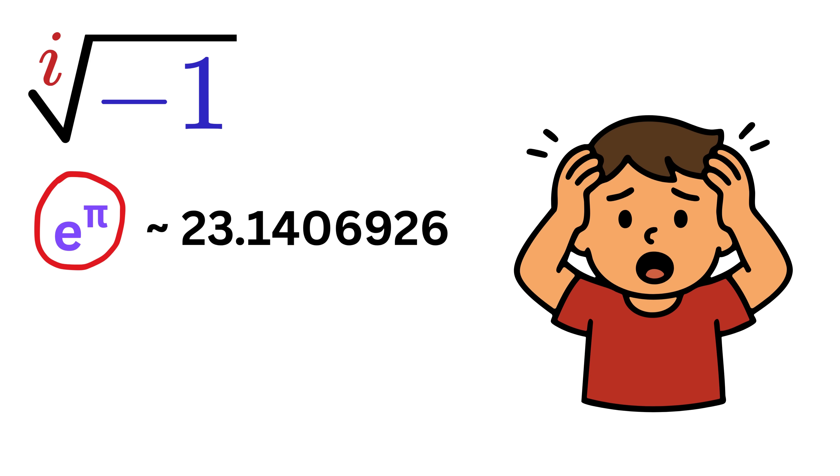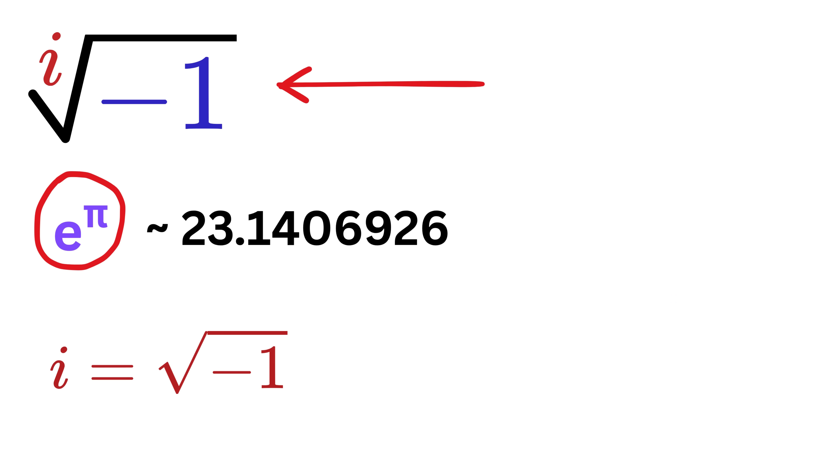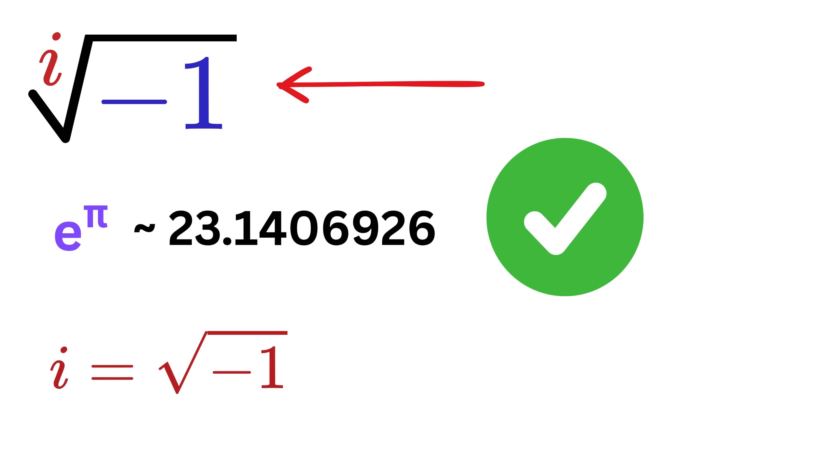It's quite shocking, isn't it? Even though i itself is an imaginary number, something that doesn't even exist on the real number line, when we take the i-th root of negative one, we end up with a completely real value.